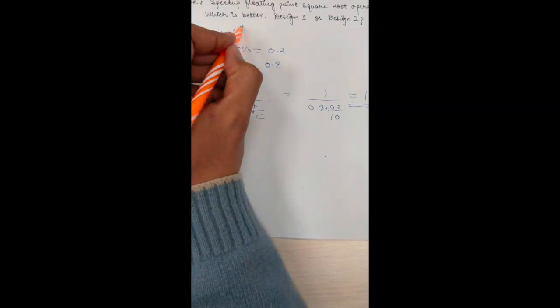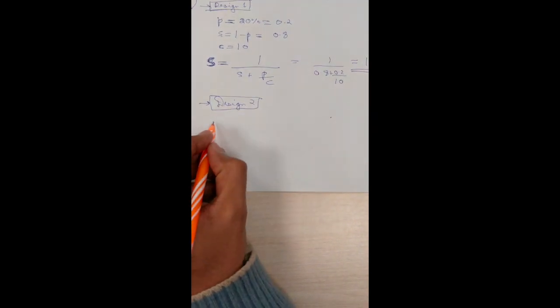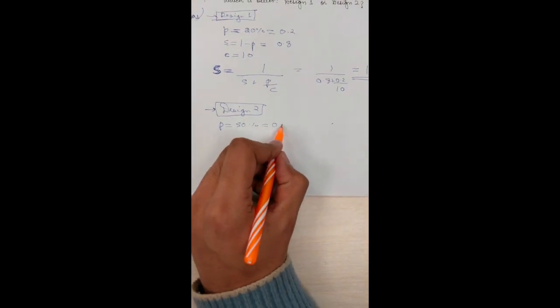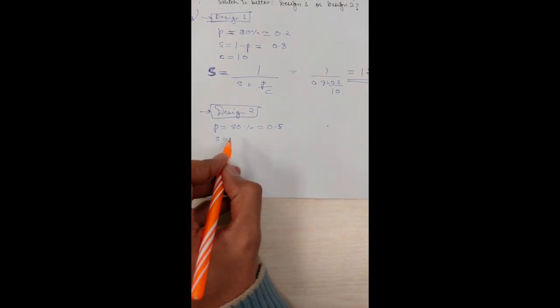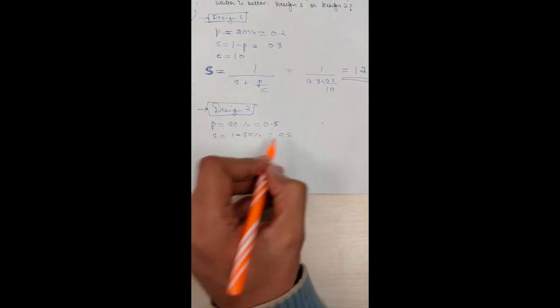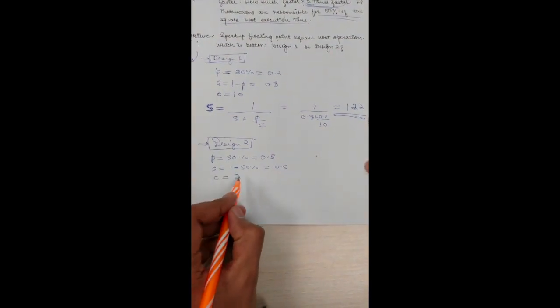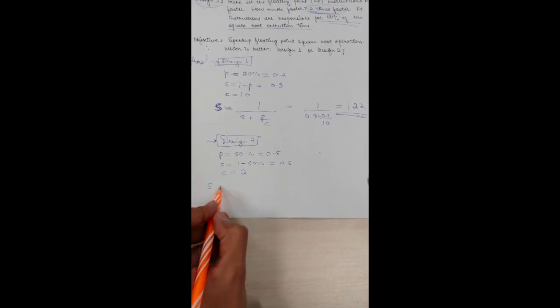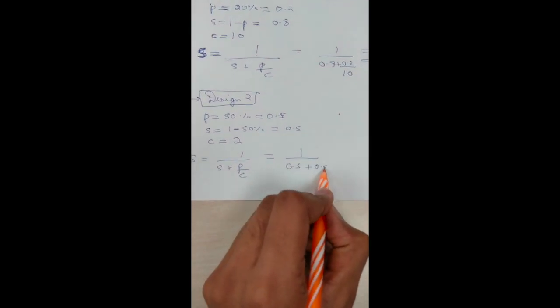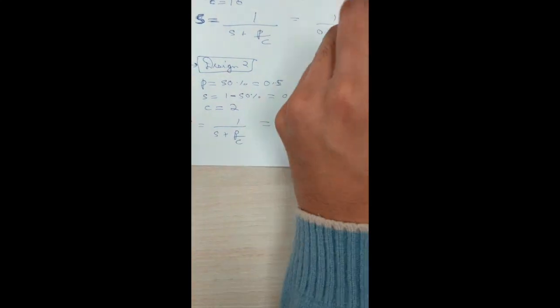This is for Design 1. Now for Design 2, our parallel computation is 50%. So 50% equals 0.5. Similarly, serial instructions are 1 minus 50%, which equals 0.5 again. And we have to increase the floating point instruction by 2 times. So here the number of cores is twice, obviously. Now again, speed up equals 1 upon (s + p/c), which equals 1 upon (0.5 + 0.5/2). And after calculating it, we get the value of speed up as 1.33.